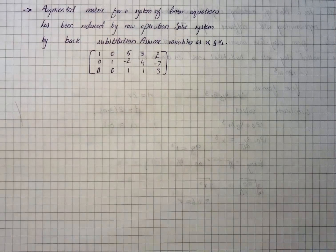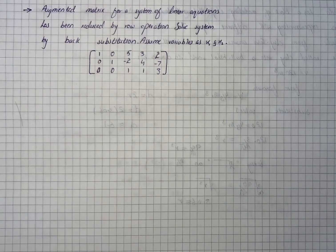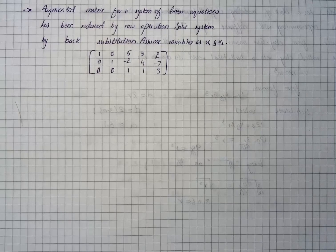The question says augmented matrix for a system of linear equations has been reduced by row operation. So solve the system by back substitution and assume variables as x1 and x2.